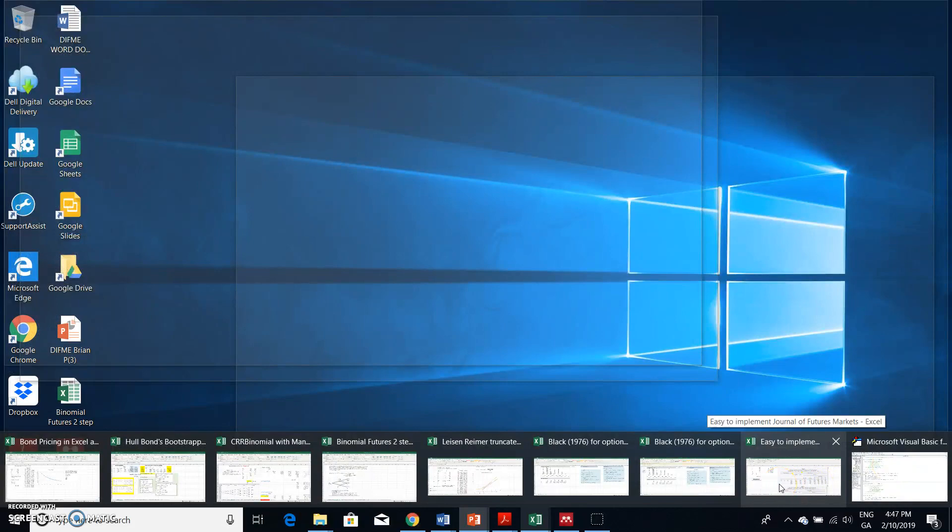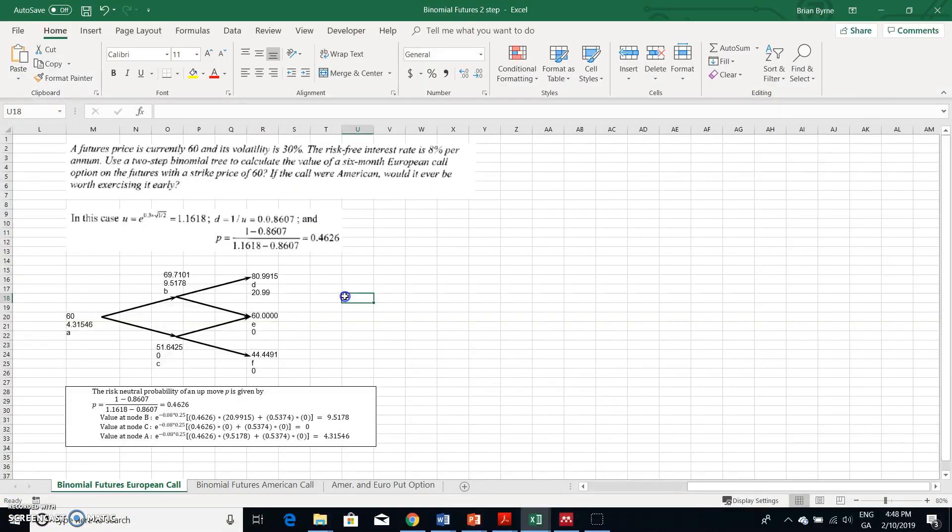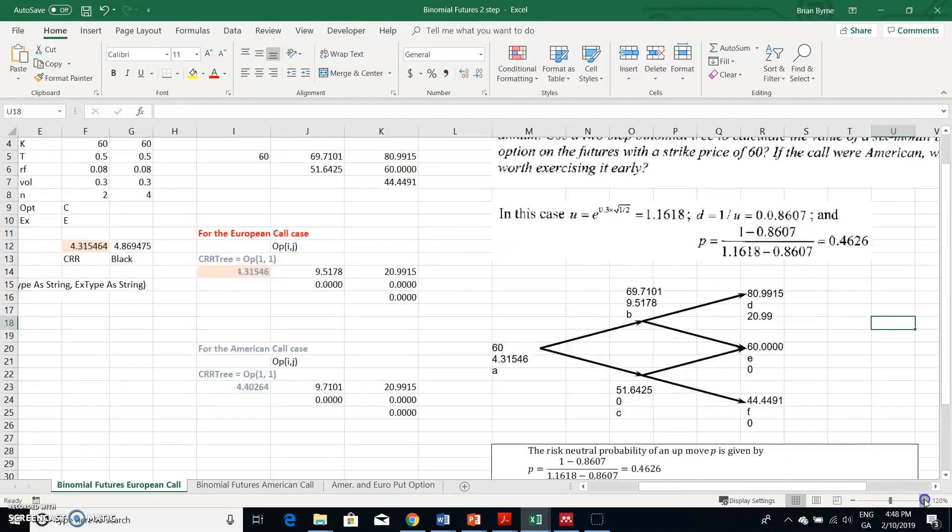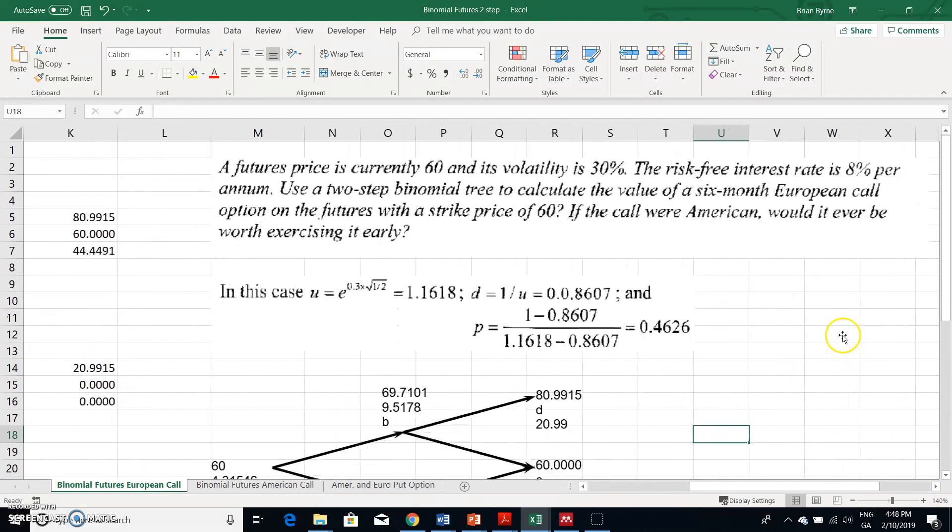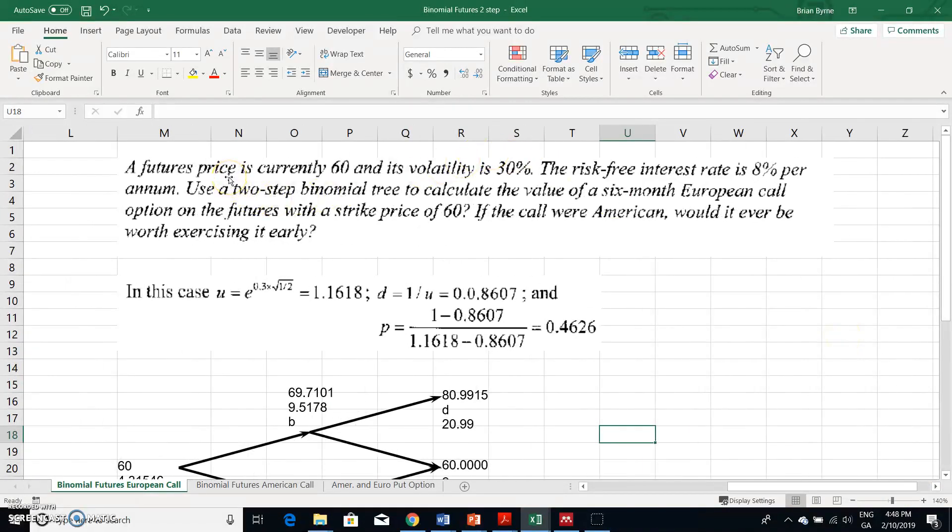I'm going to go into a spreadsheet and set out a question replicated from John Hull. The plan is to take a standard textbook question based on binomial futures - a valuation of a futures option - and set it up in a two-step tree. Then I'll follow the basic formulas and extend this out to 100 or 200 steps, taking a very elementary example to a much more complex estimation.